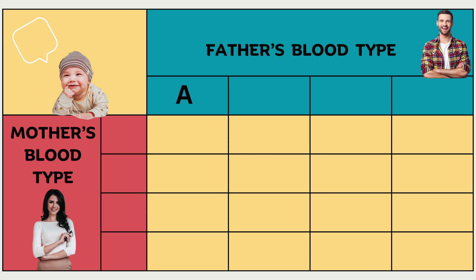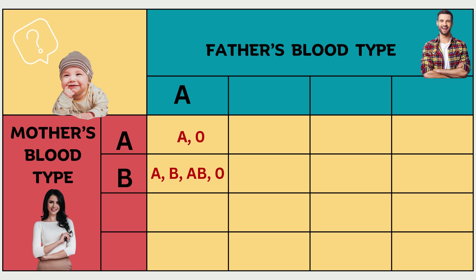For instance, if the mother and father are both blood type A, the child could be A or O. However, if the mother is blood type B and the father is blood type A, the child could be any of the four blood groups: A, B, AB, or O. If the mother is blood type AB and the father is blood type A, the child could be A, B, or AB, but it is not possible to be blood group O.